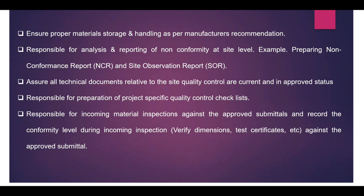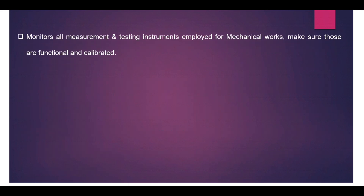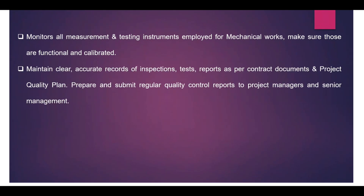Once you receive material on site, verify dimensions and all test certificates against the approved material submittal. Also monitor all measuring and testing instruments used for mechanical works to ensure they are functional and properly calibrated. On site, if an instrument is used to measure dimensions, proper calibration records must be maintained within the quality documents to get accurate results — and during auditing, calibration records will be verified. Maintain clear and accurate records of inspection and test reports as per contract documents and the project quality plan.